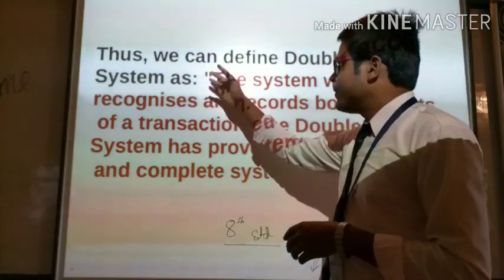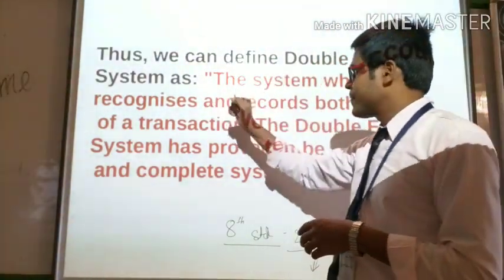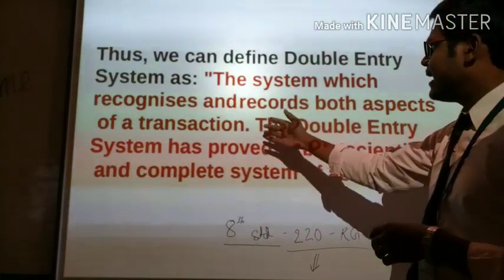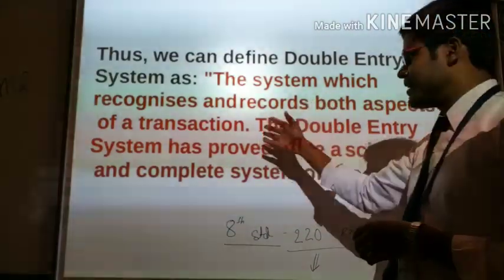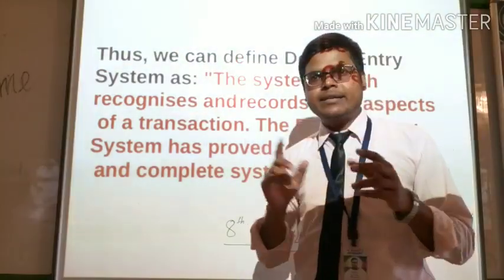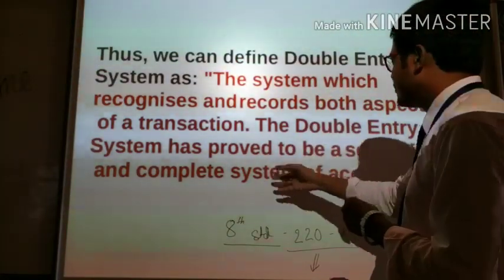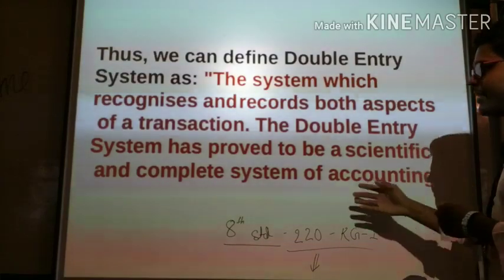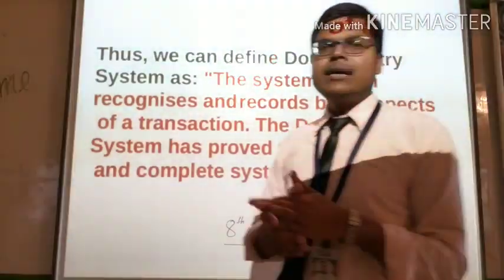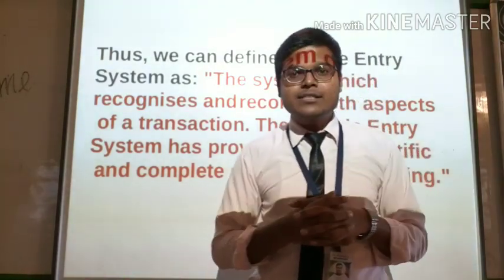Thus, we can define double entry system as the system which recognizes and records both aspects of a transaction — that is, the debit and credit aspects. The double entry system has proved to be a scientific and complete system of accounting.